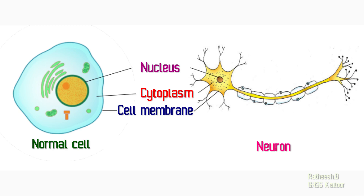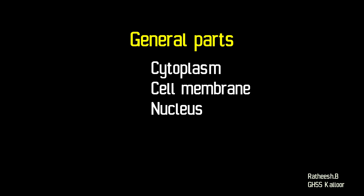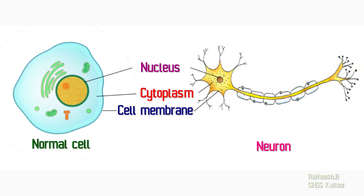Here, the picture of a normal animal cell and a neuron or nerve cell is given. Observe this picture. Can you identify the similarities between the normal animal cell and the neuron? You can see certain similarities between these two cells. Both these cells have cell membrane, cytoplasm, and nucleus. You can also find many other similarities between these two cells.